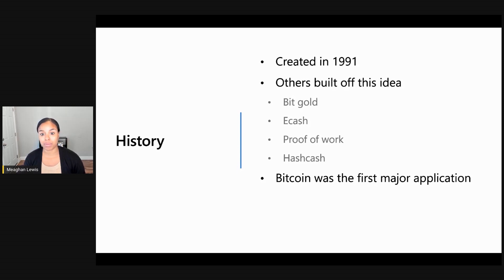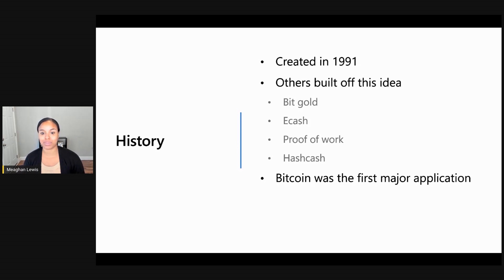There was Bitgold, which combined elements of cryptography and mining for new currency. There was eCash, which was a cryptographic electronic cash system. Proof of work is the original consensus algorithm to achieve trust in a network. And Hashcash, a proof of work system to limit risk and denial of service attacks. But it wasn't until 2009 that we really saw the first global use case with Bitcoin.